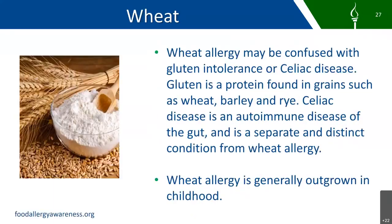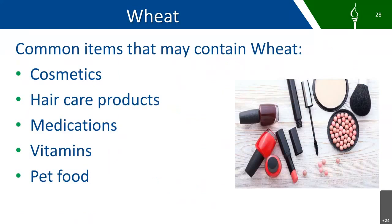Wheat is another food that people are allergic to. The wheat allergy may be confused with gluten intolerance or celiac disease. Gluten is a protein found in grains such as wheat, barley, and rye. Celiac disease is an autoimmune disease of the gut and is a separate and distinct condition from the wheat allergy. Wheat allergy is usually outgrown in childhood. Some common items that may contain wheat include cosmetics, hair care products, medication, vitamins, and pet food.